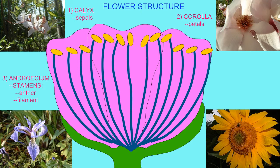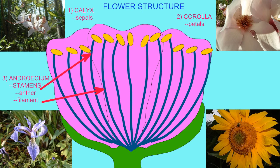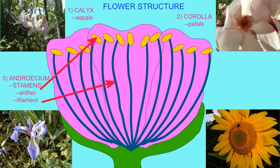Inside the whorl of petals is the androecium, a whorl of male structures known as stamens. A stamen consists of the anther, which contains the microsporangia that produce the pollen, on a stalk known as the filament.